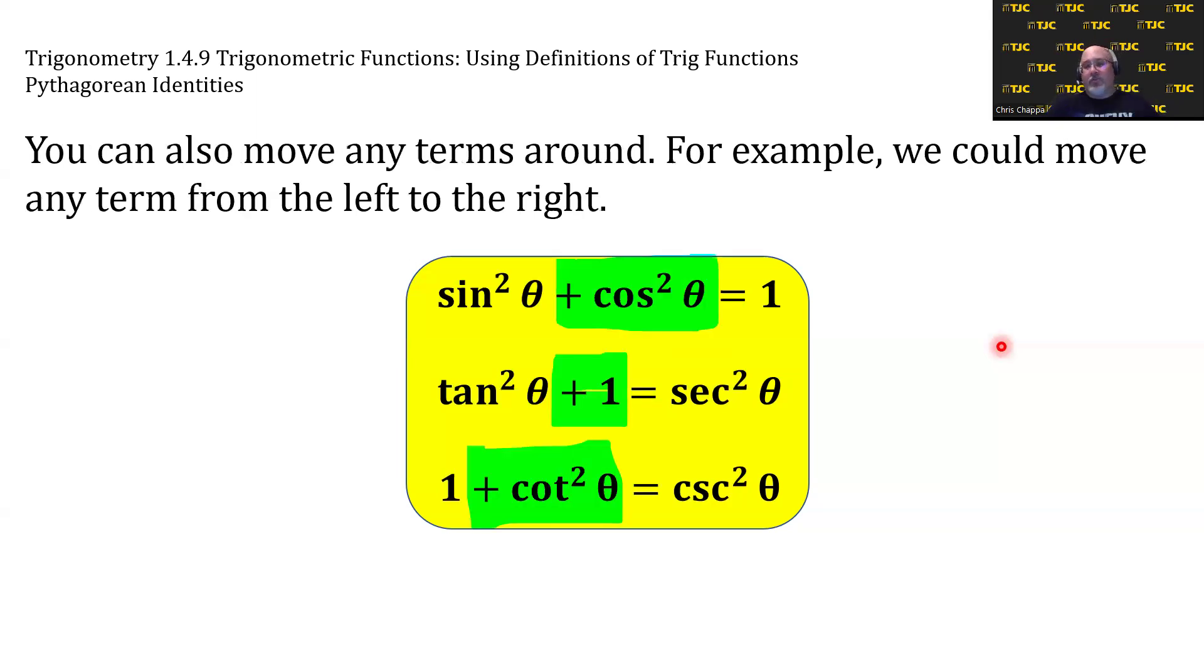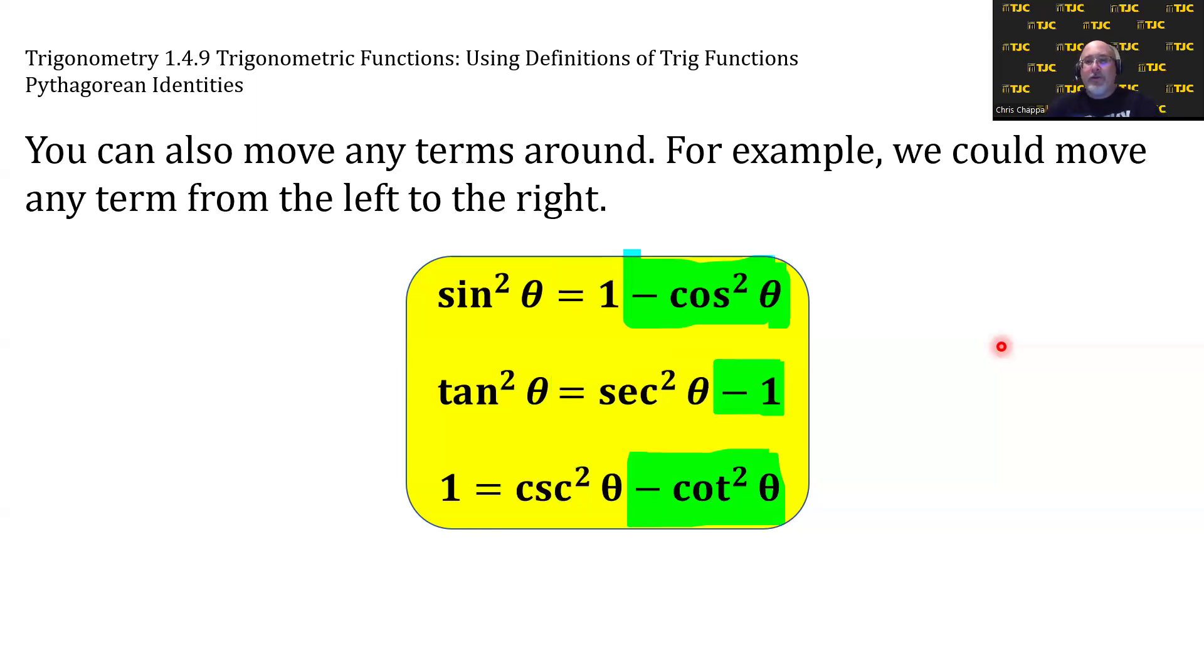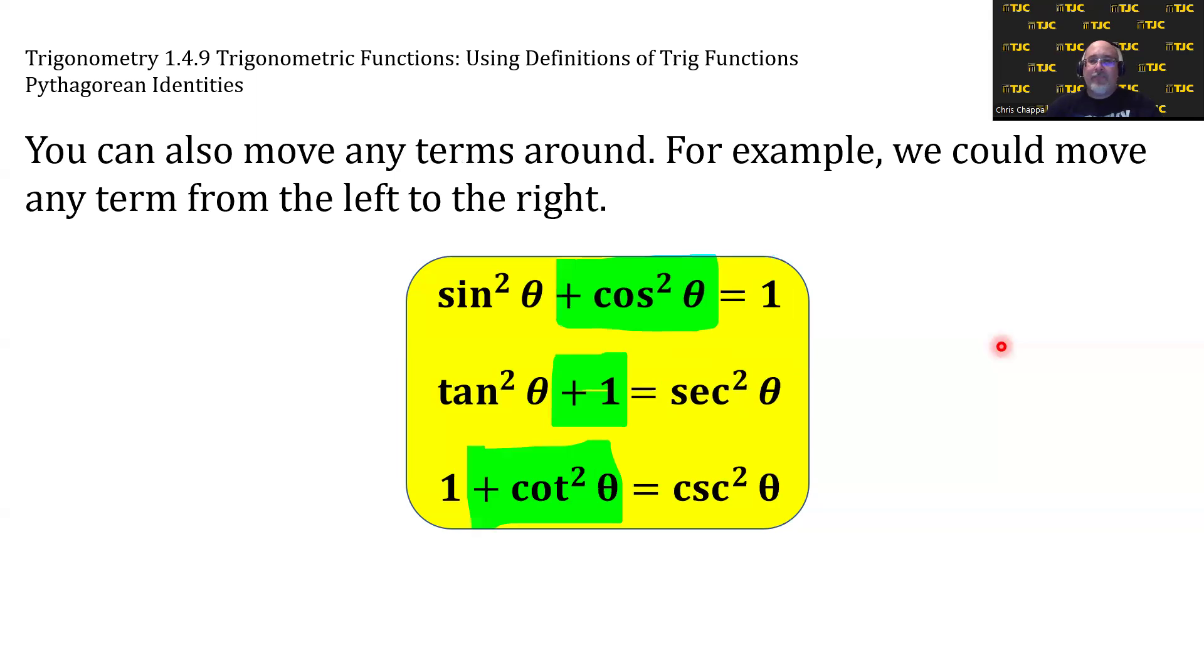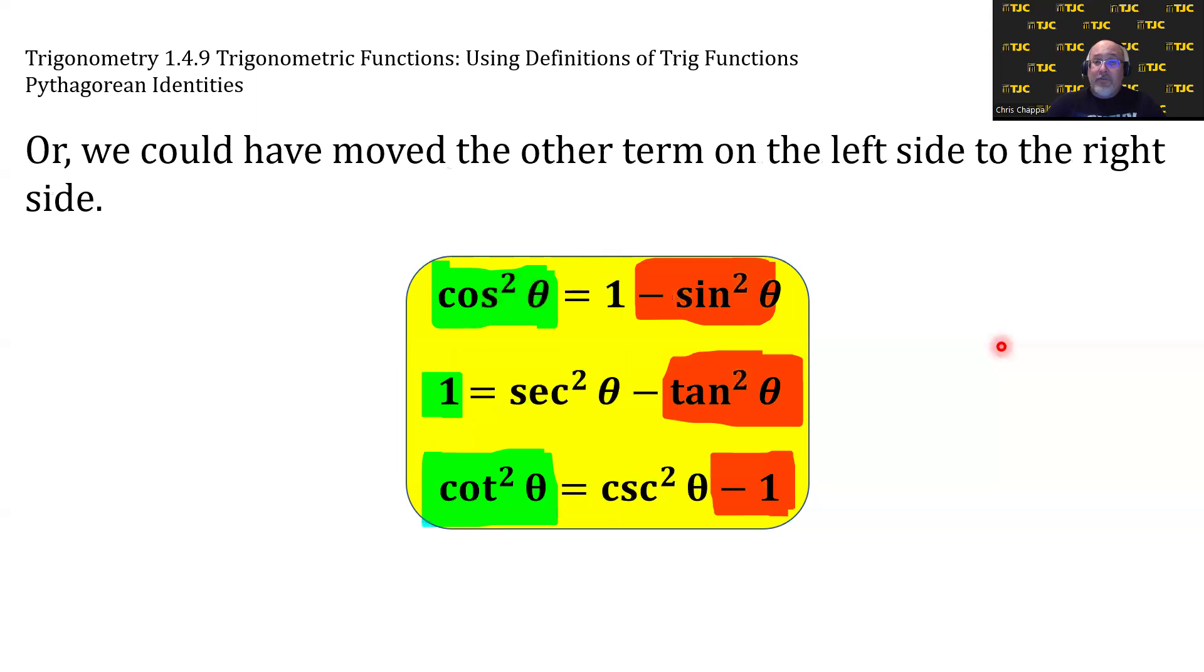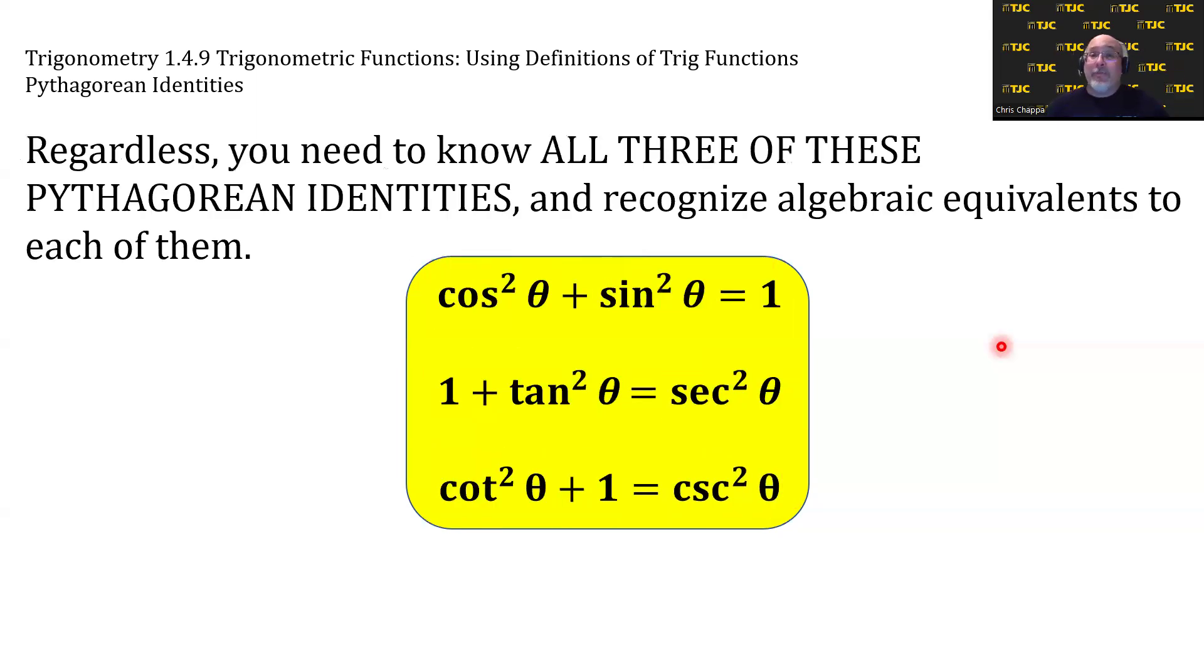But you could also move terms around. For example, we can move any term from the left to the right. I could take these green terms, move them to the right side, and then they become negative just like that. Or we could have moved the other term. So let's put the red terms on the right and the green terms back on the left like that. My point is there's a lot of ways to algebraically manipulate these three Pythagorean identities.